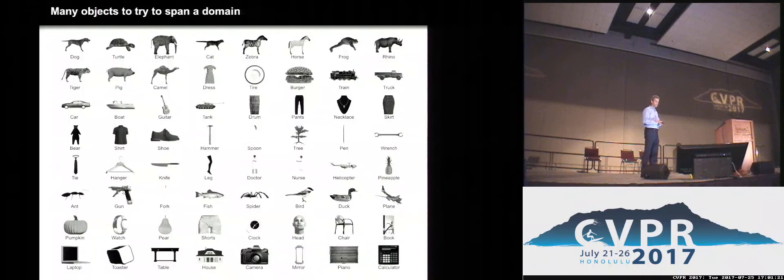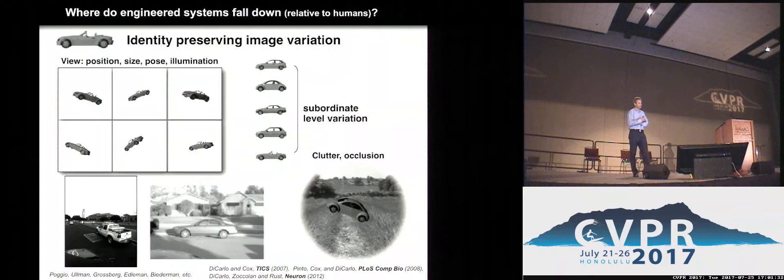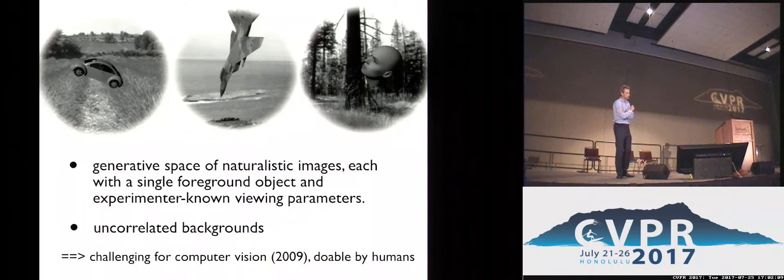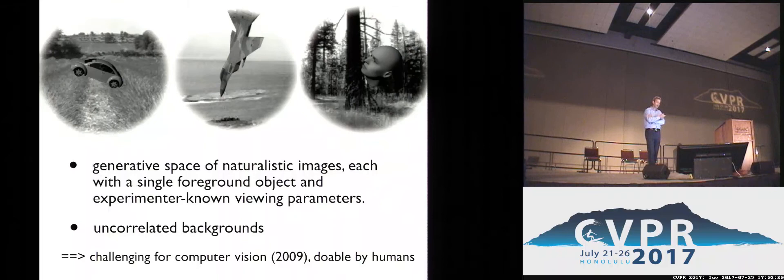Object recognition is challenging not because there are thousands of objects, but because the same object will never present the same image to your eyes twice — due to variation in position, size, pose, illumination, subordinate level variation, clutter, background clutter, and even occluding clutter. We generate images with rendered objects placed on uncorrelated backgrounds, which we call naturalistic. We found in 2009 that these images would easily foil computer vision systems at the time claiming to do object recognition, yet humans could do this quite well. So a lot of the data I'll show you comes from these kinds of images.